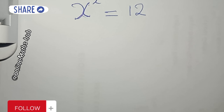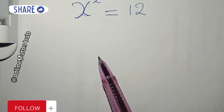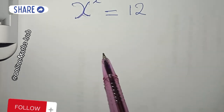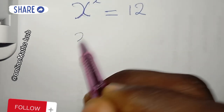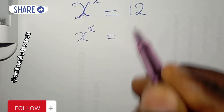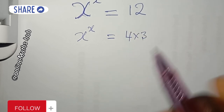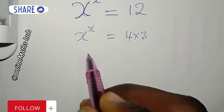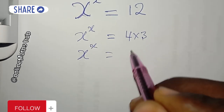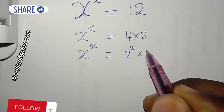So let's proceed with this video. What I'm going to do first is split the right-hand side. The left-hand side is x to the power of x, and I can write 12 as 4 times 3. I can further simplify 4 as 2 to the power of 2, so we have 2² times 3.